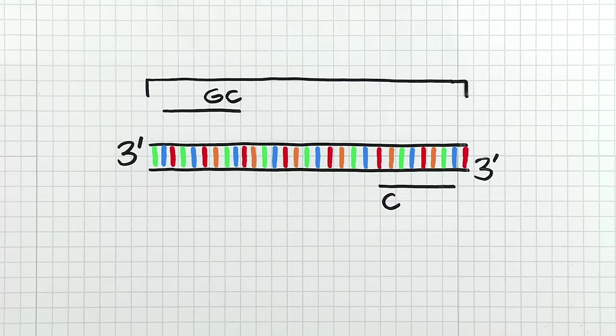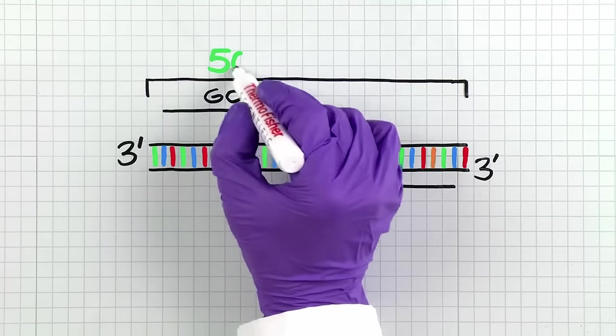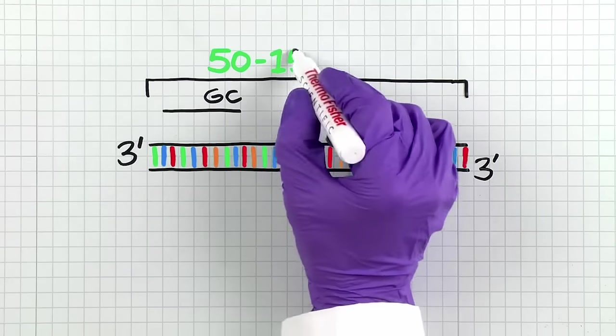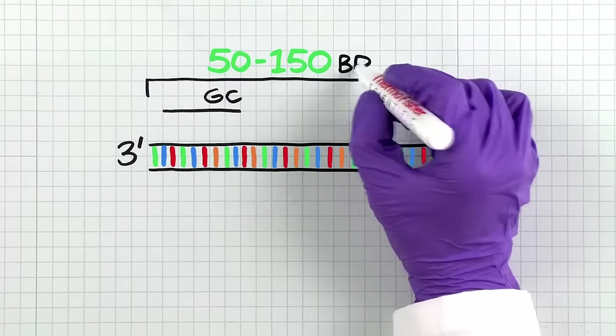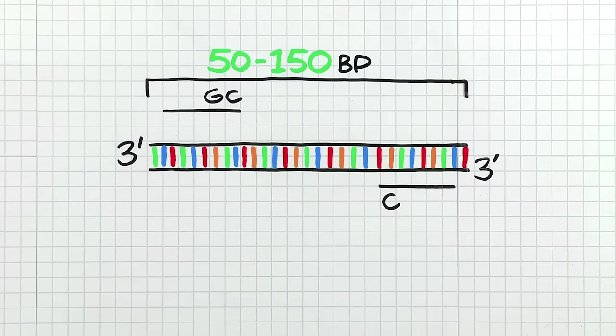Finally, amplicons should be short, generally between 50 and 150 base pairs. The next step is primer validation.